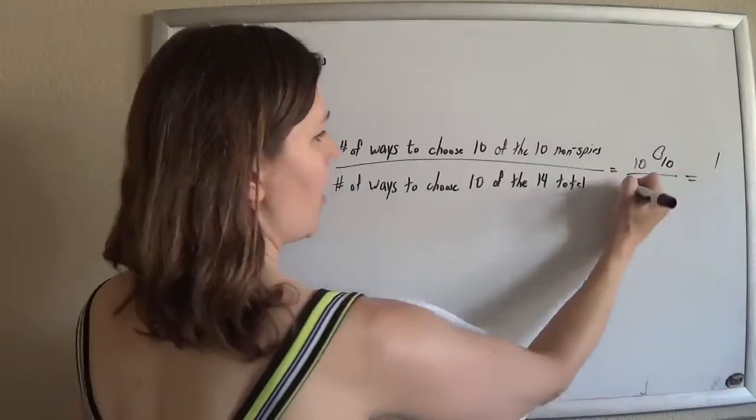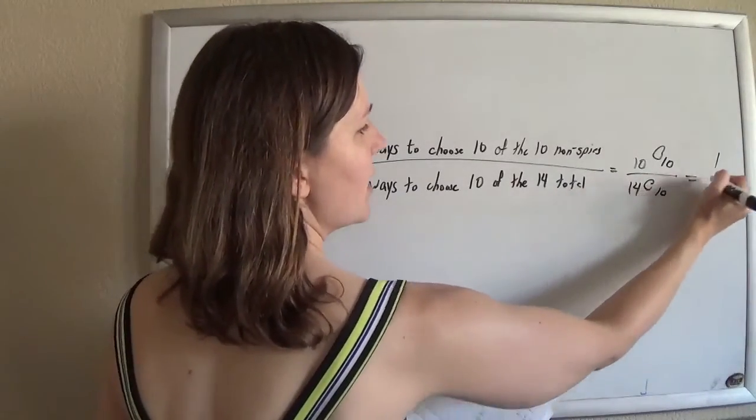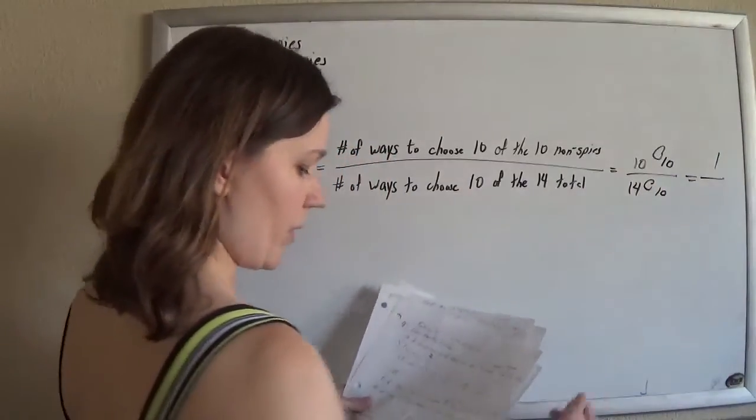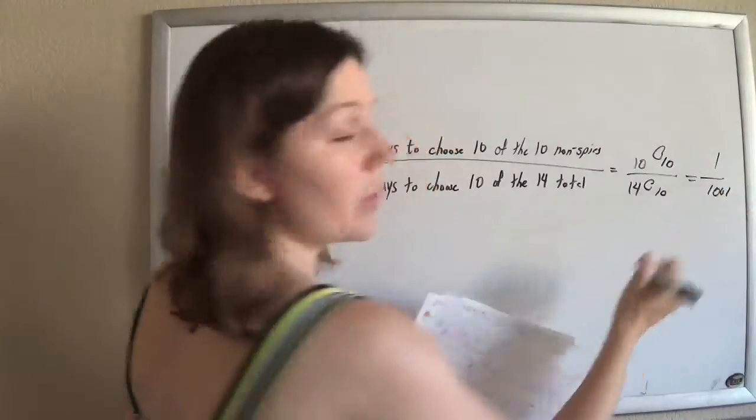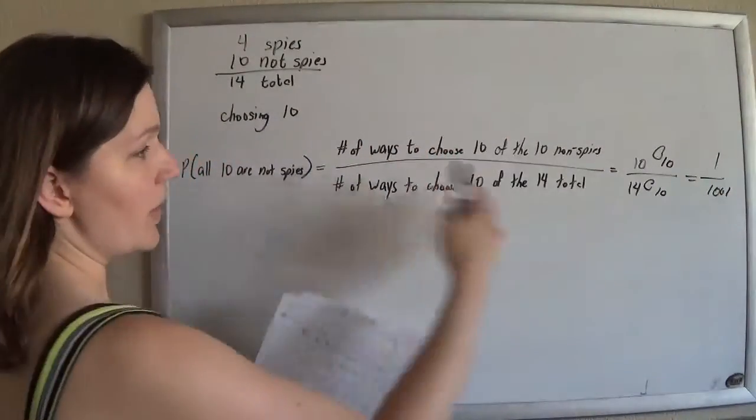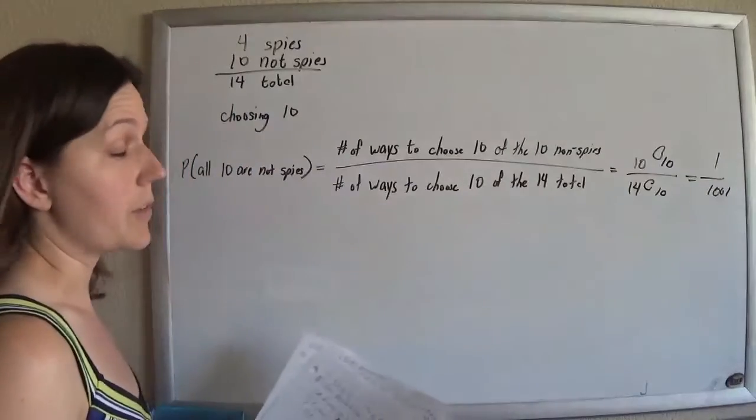And if I have 14 total people and I want to choose 10 of them, there are 1001 ways to do that. So the probability of getting all of those is 1 out of 1001.